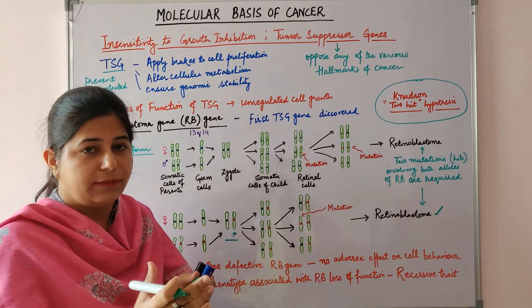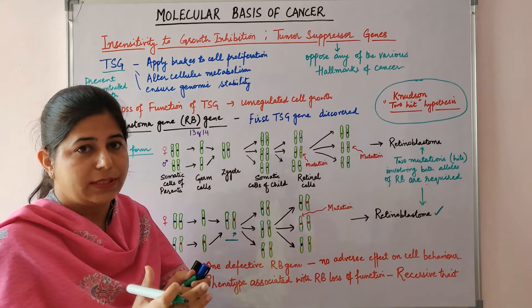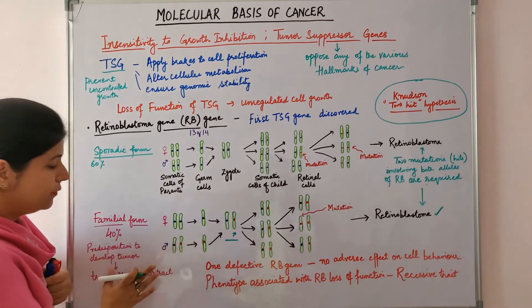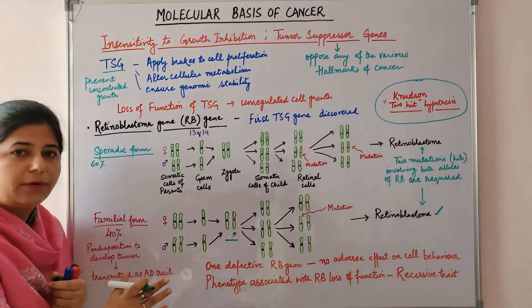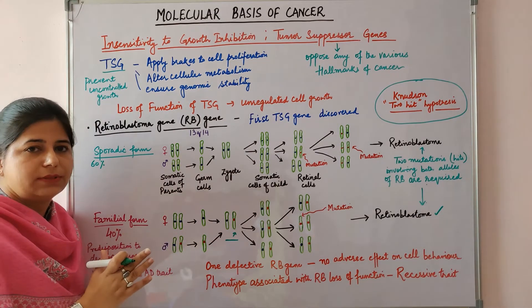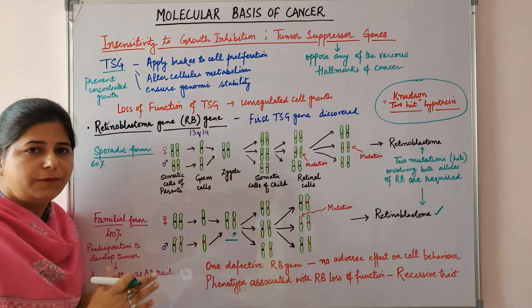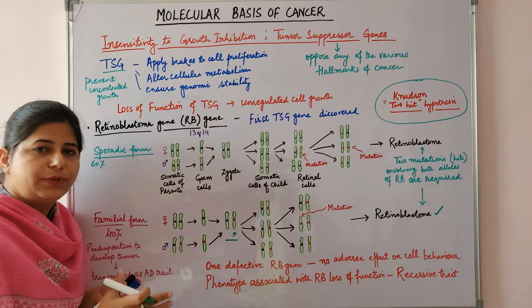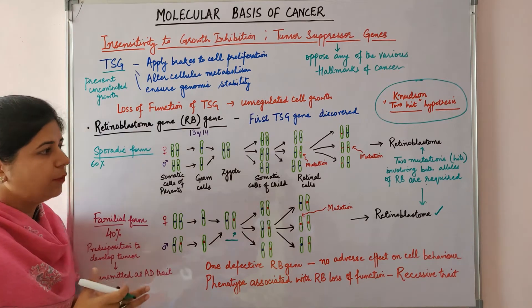The chances of development of retinoblastoma are high in familial form because at least a proportion of retinoblasts develop this second hit. These individuals have a 10,000 times increased risk of development of retinoblastoma as compared to the general population.